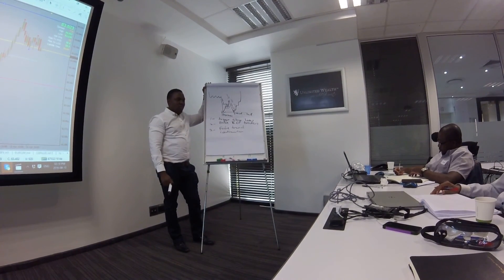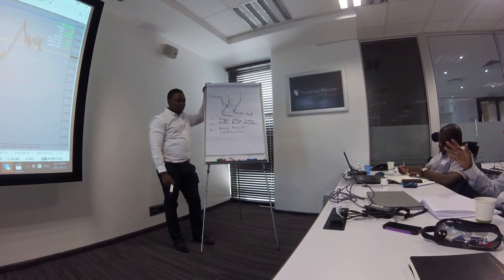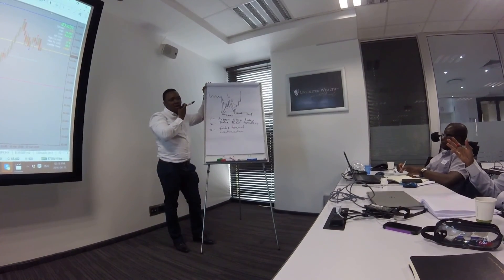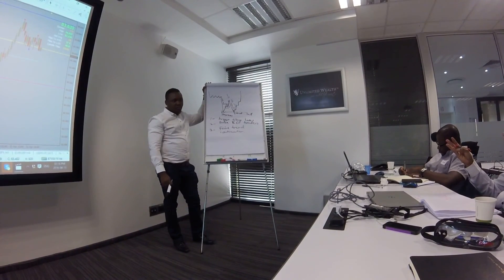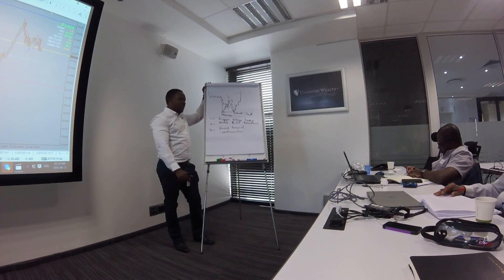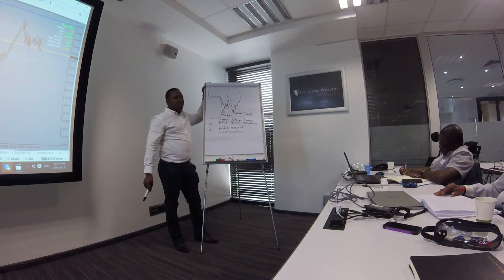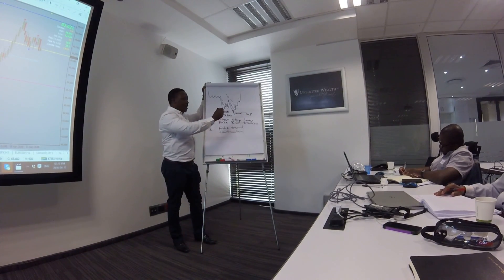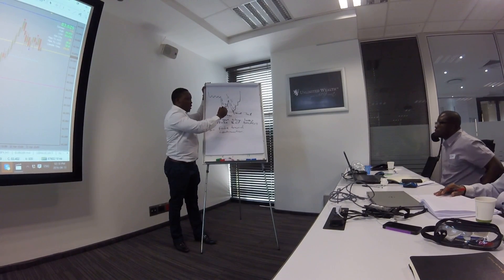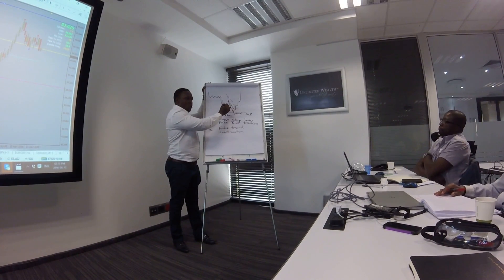A student asks: isn't it almost impossible to get this trade right because it does everything opposite to what you'd expect? The answer is: you don't take it on the first leg. You take it on the second leg. On the first leg you are not in — but other uninformed traders are already in on the first leg.